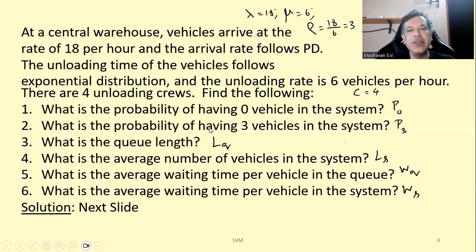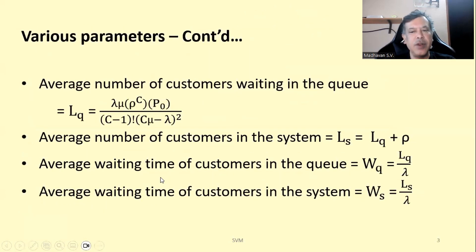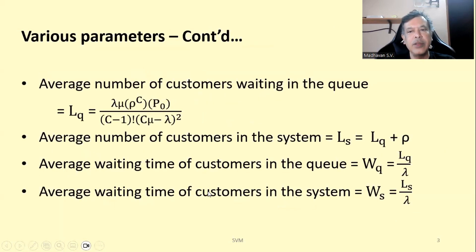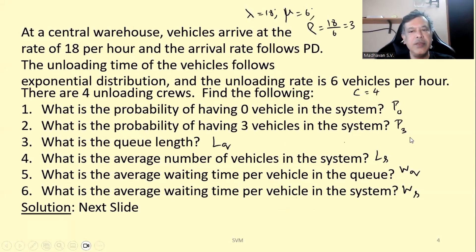Find the following: What is the probability of having 0 vehicles in the system, i.e., find P0? What is the probability of having 3 vehicles in the system, i.e., find P3? Note that since n equals 3 lies between 1 and C equals 4, we will use the first formula for P3. What is the queue length L_q? What is the average number of vehicles in the system L_s? What is the average waiting time per vehicle in the queue W_q? What is the average waiting time per vehicle in the system W_s?